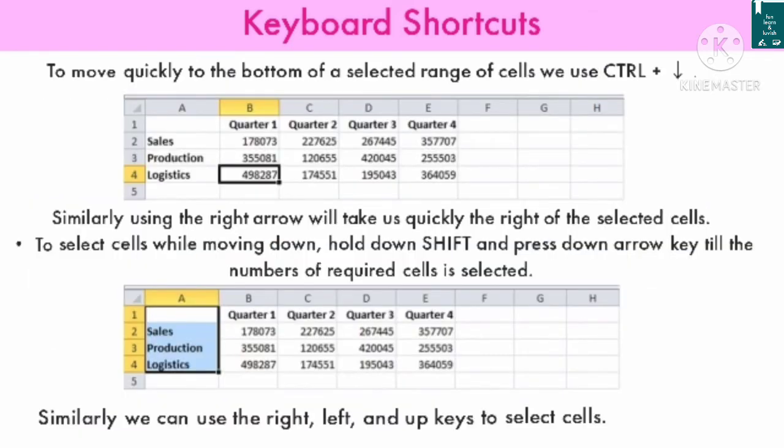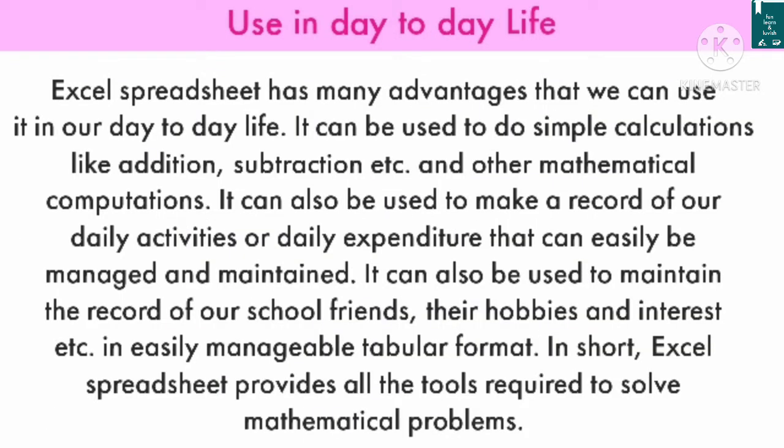To move quickly to the bottom of a selected range of cells, we use Ctrl+Down Arrow. Similarly, using the Right Arrow will take us quickly to the right of the selected cells. To select cells while moving down, hold Shift and press the Down Arrow key until the required number of cells is selected. Similarly, we can use the Right Arrow key to select cells.